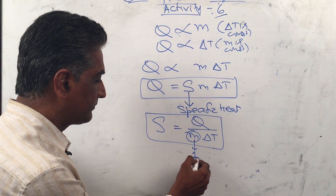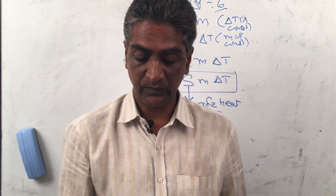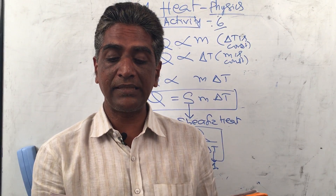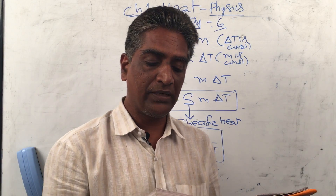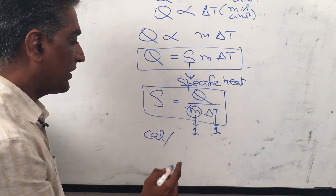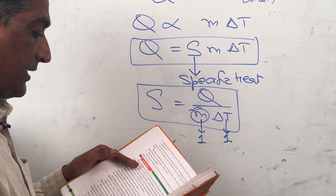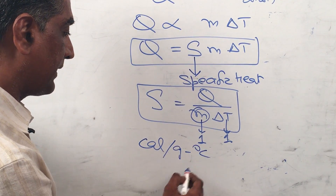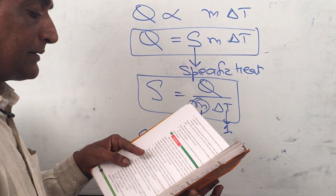When mass is 1 unit and change in temperature is 1 degree, then s equals Q. That is the heat energy required to raise the temperature of unit mass by 1 degree centigrade. The CGS unit of specific heat is calorie per gram per degree centigrade, and the SI unit is joules per kg per kelvin.